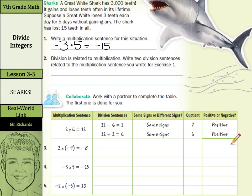Now, it says in number 2, division is related to multiplication. Write 2 division sentences related to the multiplication sentence you wrote for exercise 1. Well, we have negative 15 divided by negative 3 is going to equal 5, since it's a positive 5 we had there. And then negative 15 divided by 5 is going to equal negative 3.